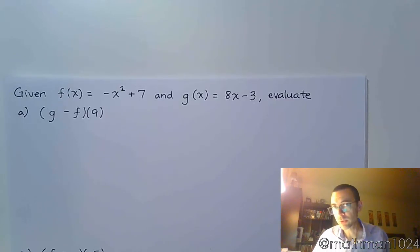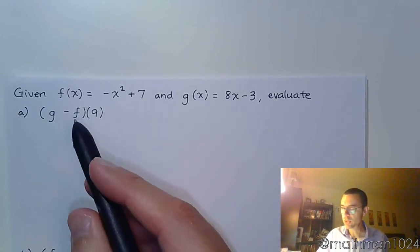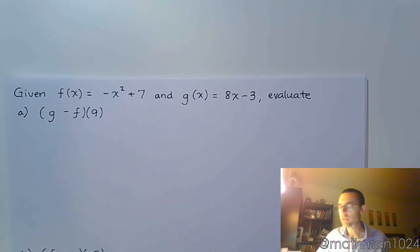We're just going to run through a few more examples of function operations. So here we have two functions, f of x equals negative x squared plus 7, and g of x equals 8x minus 3. We need to evaluate this series of problems, starting with g minus f of 9.